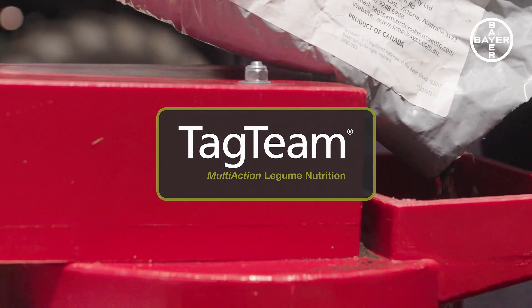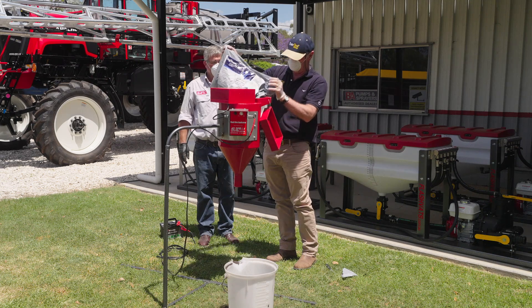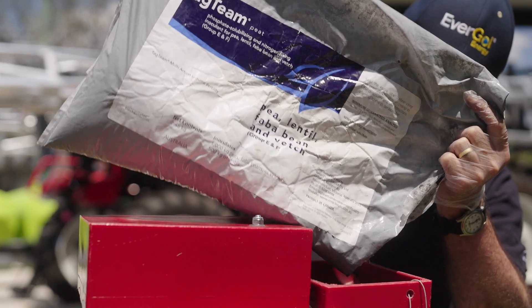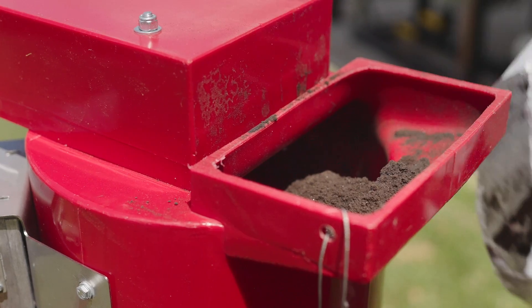Peat-based inoculants are traditionally applied as slurries, mixed with water and sprayed onto the seed at sowing time, but that's not necessary with the Tag Team products.